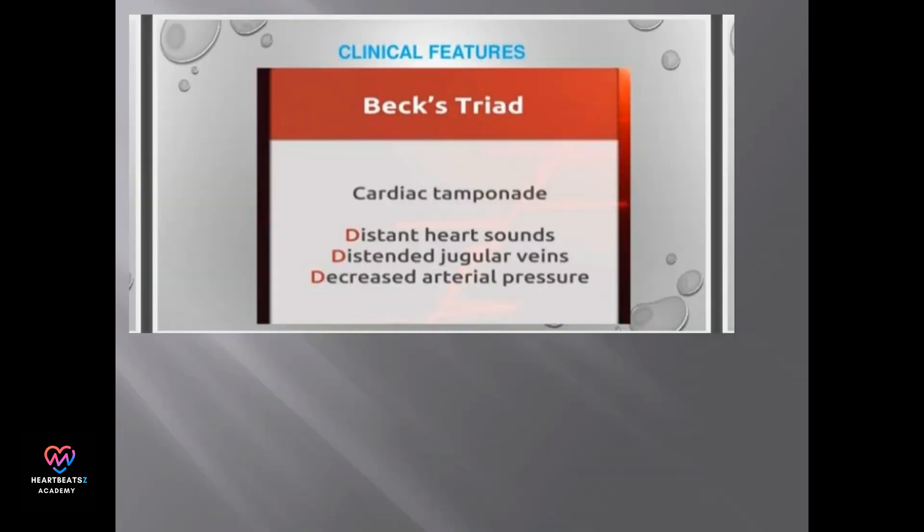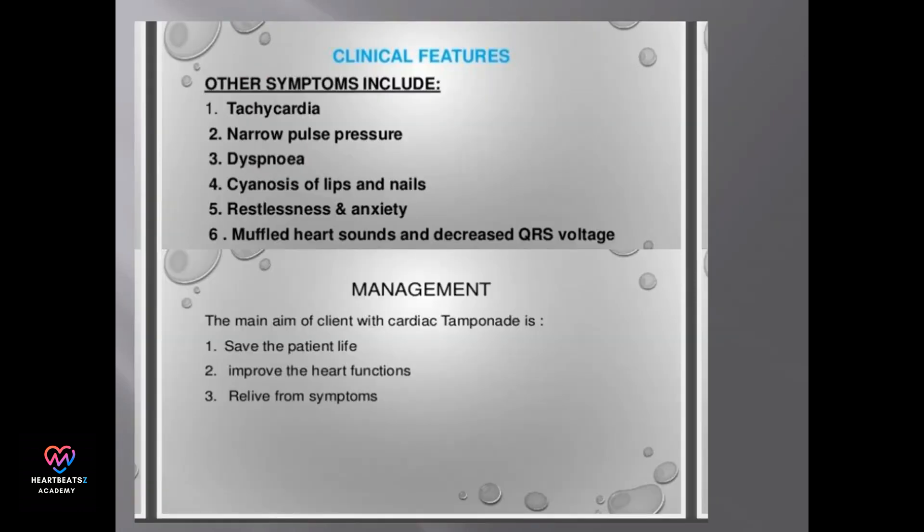Beck's triad is a set of clinical features associated with cardiac tamponade: distant heart sounds, distended jugular veins, and decreased arterial pressure.